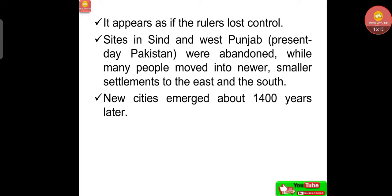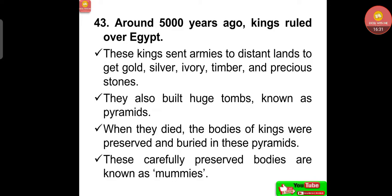It appears as if the rulers lost control. Sites in Sindh and West Punjab in Pakistan were abandoned, while many people moved into newer, smaller settlements to the east and the south. New cities emerged about 1400 years later.